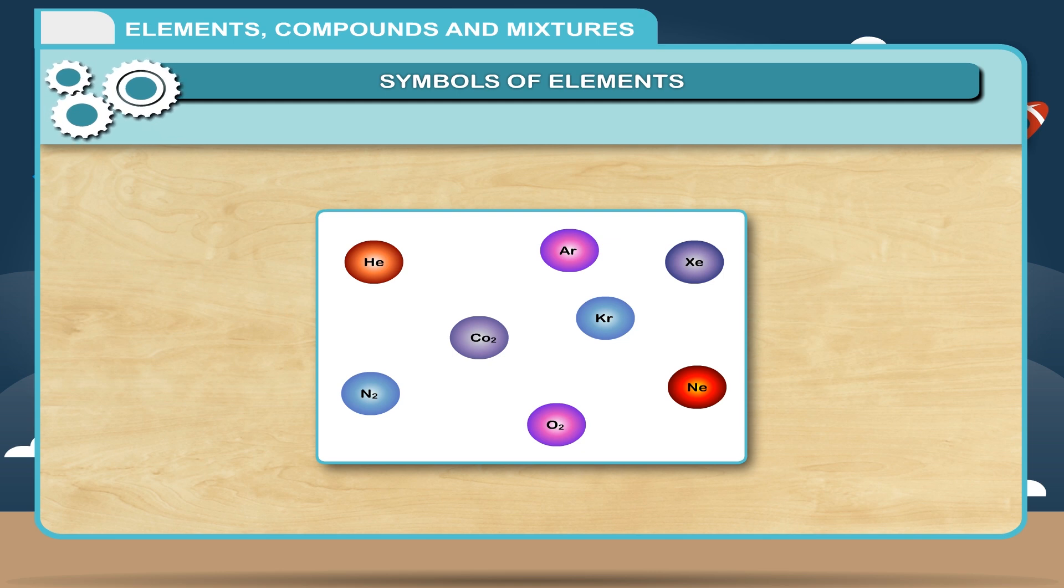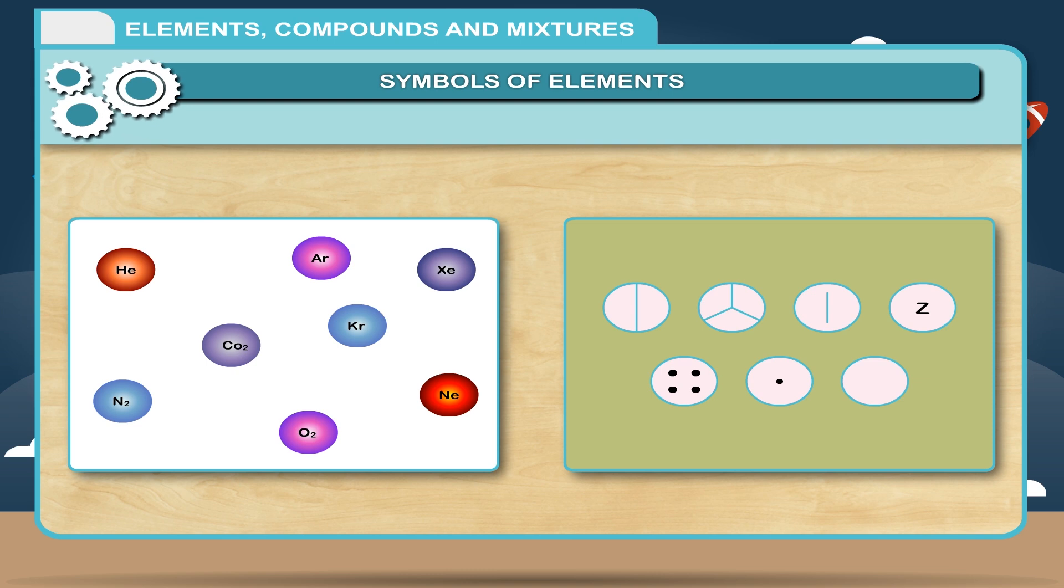Symbols of Elements. Symbols are representation of elements by using one or two alphabet. Writing complete names of elements and compounds is time consuming but symbols are easy to remember and quick to write.